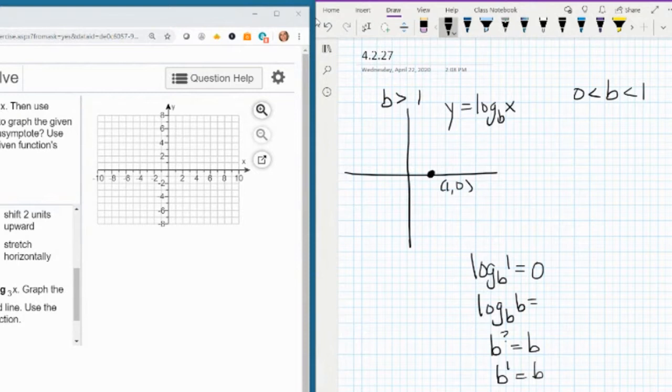And then also we know that log base b of b, what power do you raise b to to get b? How about b to the first? Wouldn't that be equal to b? Yeah. So any time you take log base b of b, you get a 1, because it's b to the first power that's equal to b. So that means that every log function is going to go through the point (b, 1).